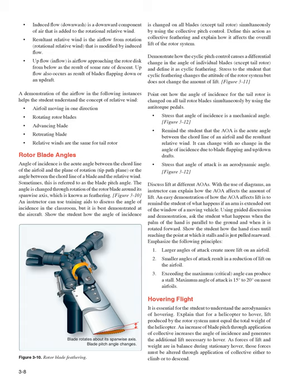A demonstration of the airflow helps the student understand the concept of relative wind in the following instances: airfoil moving in one direction, rotating rotor blades, advancing blade, retreating blade — relative winds are the same for the tail rotor. Rotor blade angles: angle of incidence is the acute angle between the chord line of the airfoil and the plane of rotation (tip path plane), or the angle between the chord line of a blade and the relative wind. Sometimes this is referred to as the blade pitch angle. The angle is changed through rotation of the rotor blade around its spanwise axis, which is known as feathering.